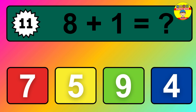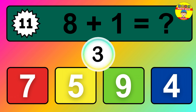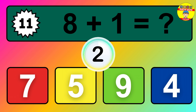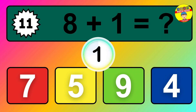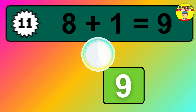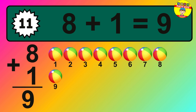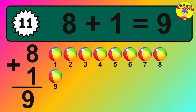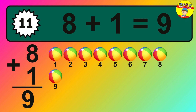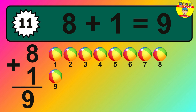Question 11. 8 plus 1 equals what? So the answer is 8 plus 1 is 9. Let's count it: 1, 2, 3, 4, 5, 6, 7, 8, 9.